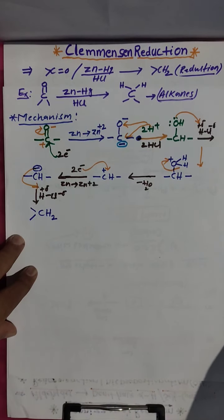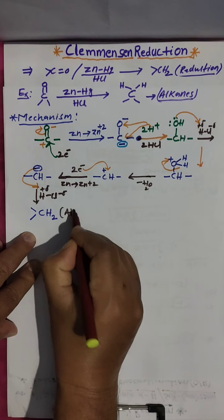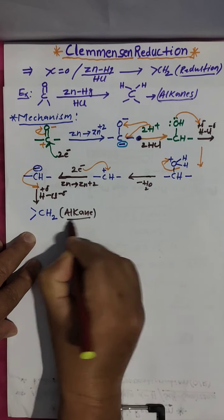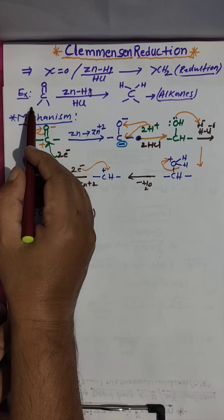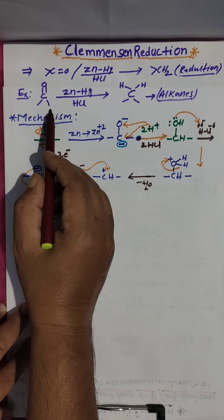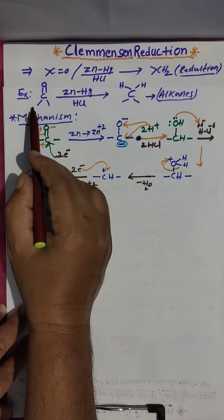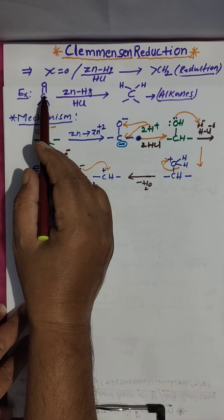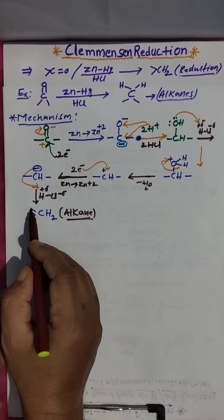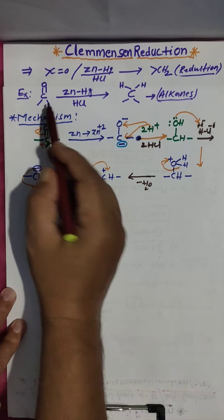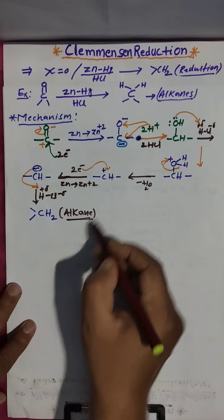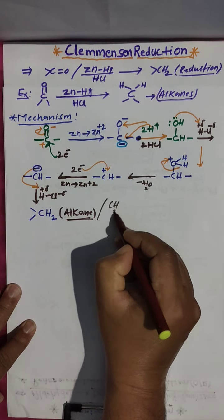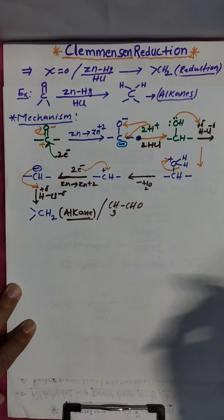You are getting CH₂, and this we are calling an alkane. For example, in this mechanism if you take acetaldehyde — CH₃CHO — with one hydrogen, you get ethane. So if you take acetaldehyde, what product are you getting? With two carbons, you are getting ethane.